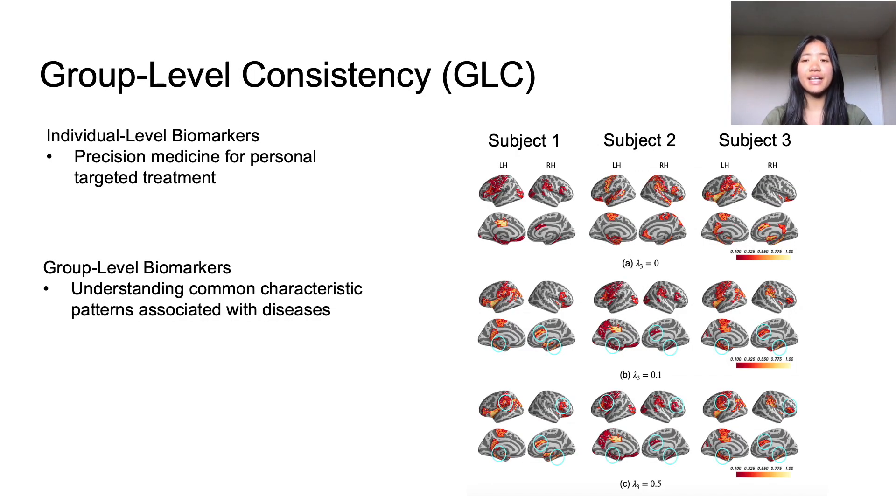Another unique concept in this network is group level consistency. And what this value does is it regularizes specific aspects of the input data to ensure that they're similar between different individuals. This means that GLC can control if the identified biomarkers are applicable to the specific individual or to the sample group as a whole. If we look at the image on the right, the pooling layer identified 21 of the most important regions of interest for three different individuals: subject 1, subject 2, and subject 3.